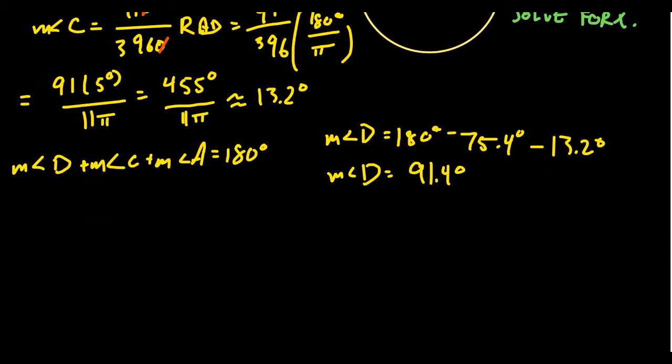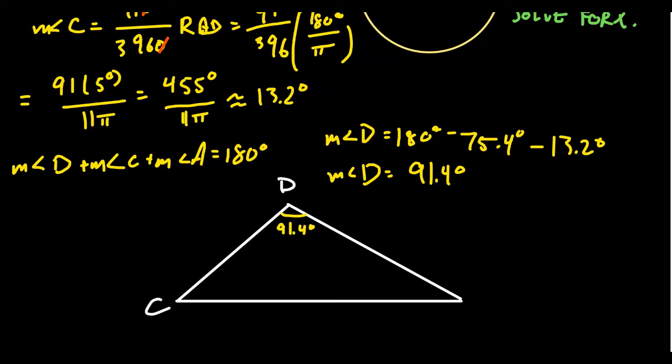So I'm going to redraw our triangle for a moment so you can see where we are in the process. So we have this triangle. This was D. And we get that the measure of D turned out to be 91.4 degrees. We have the measure of C right here, which turned out by our approximation to be 13.2 degrees.